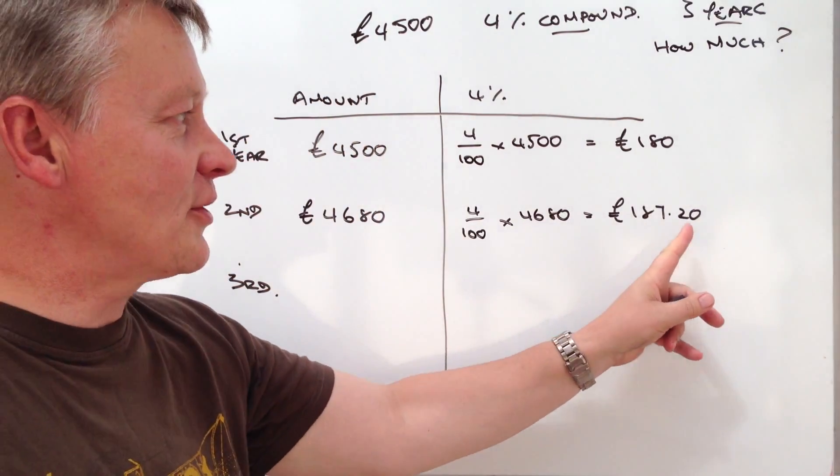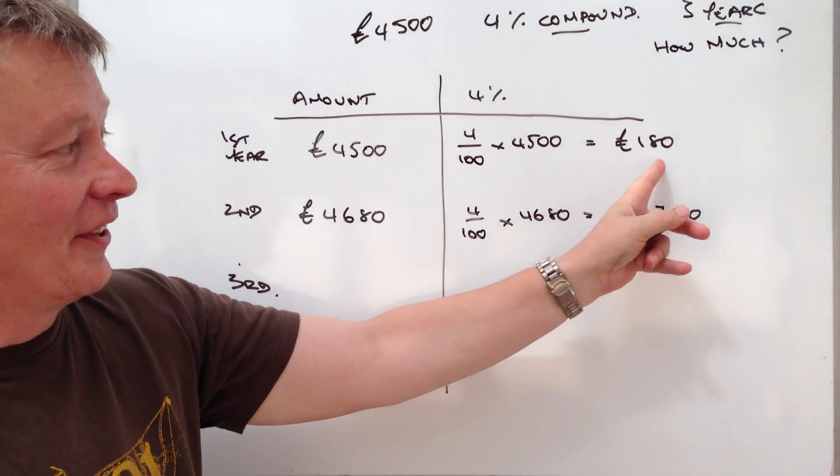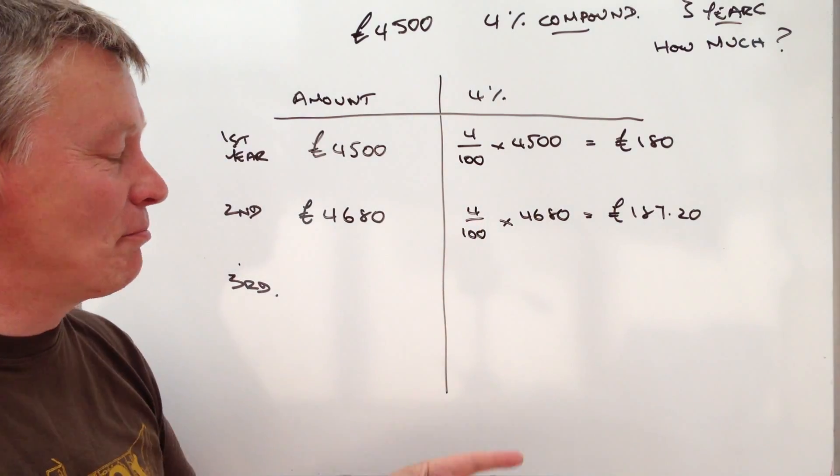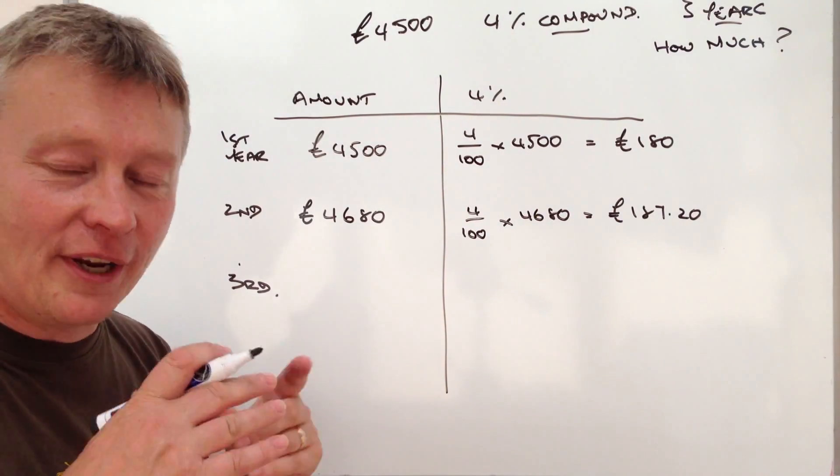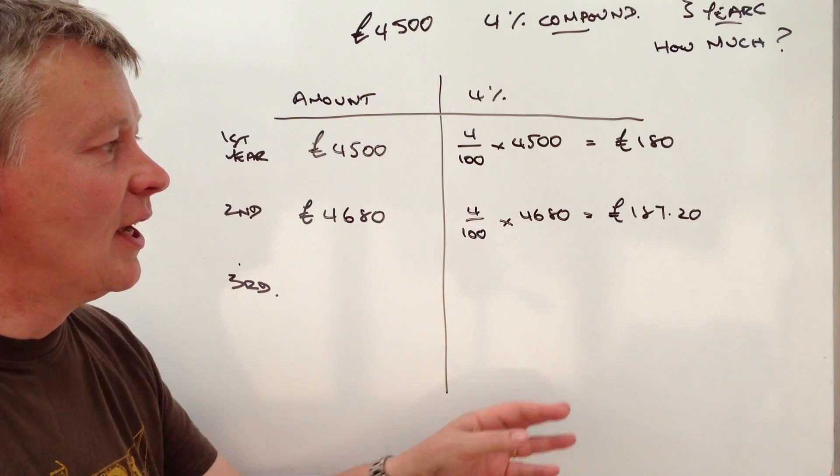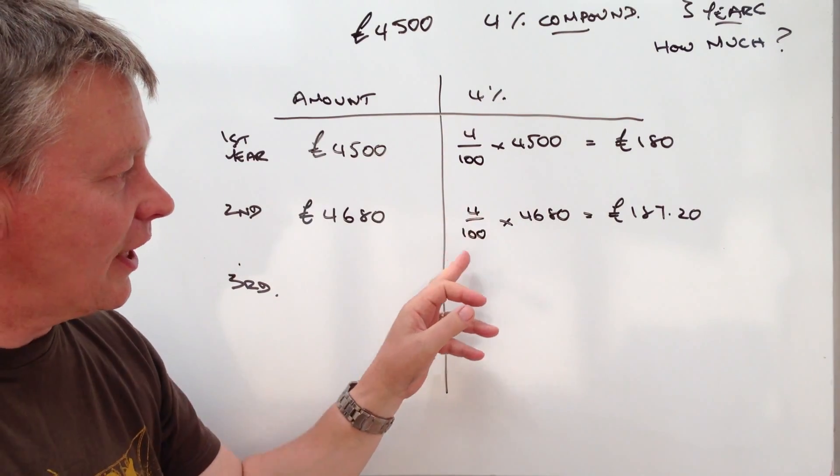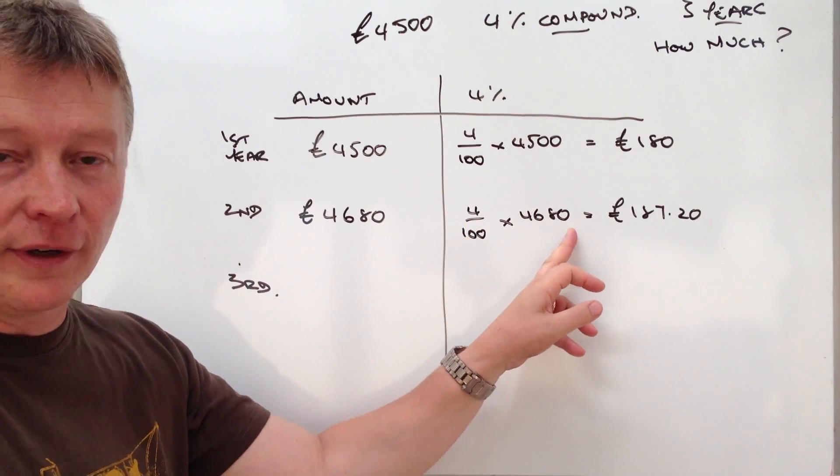It's actually only £7.20 more than the original £180 but compound interest is very very powerful over a period of a long period of time because each time you're getting 4% of a bigger amount.